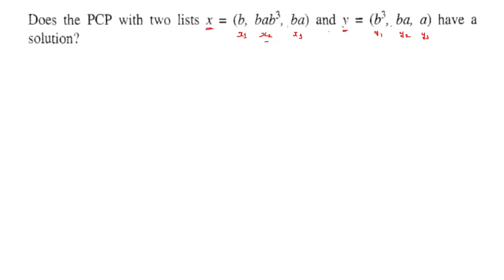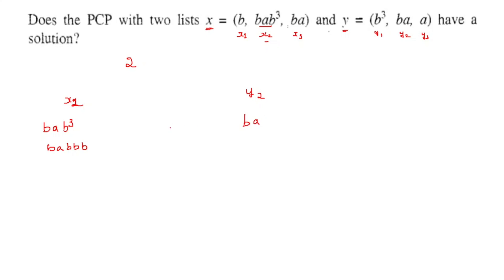To get a solution we have to perform some matching and think carefully about which word to select first. Let me take index 2, so X2 gives me BABA on the left, and Y2 gives me BA on the right. Is there a match? There is no match, so I have to select some other element and concatenate it with the already selected index 2.